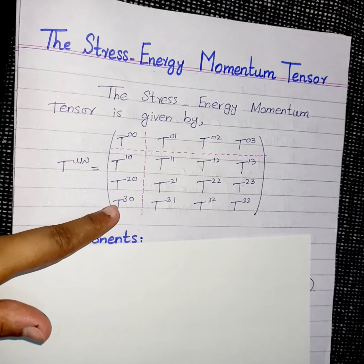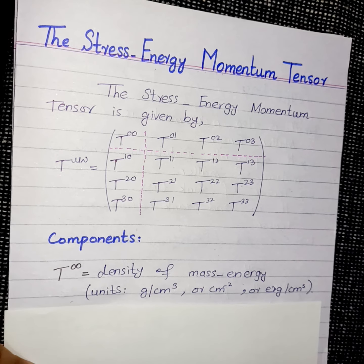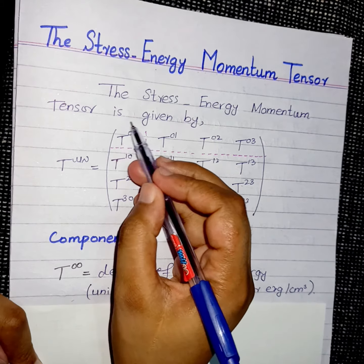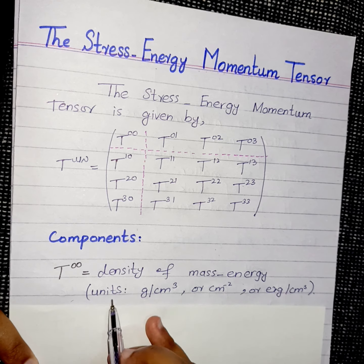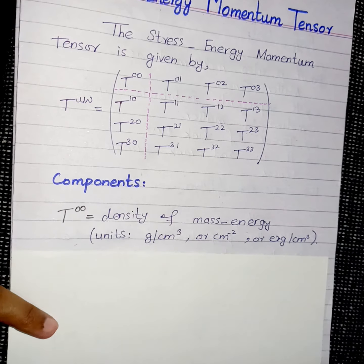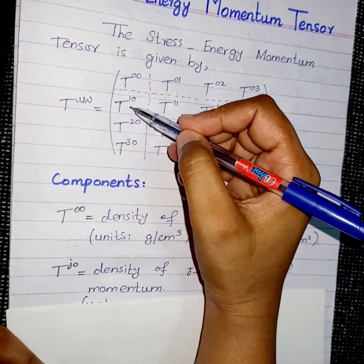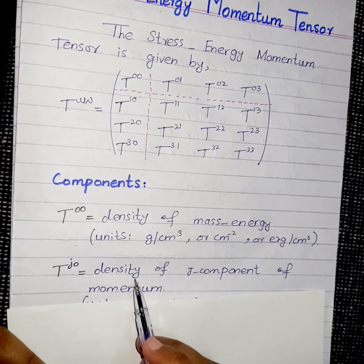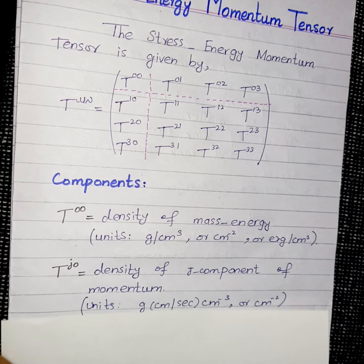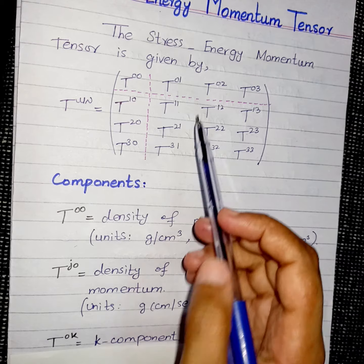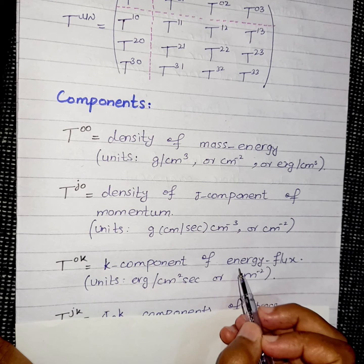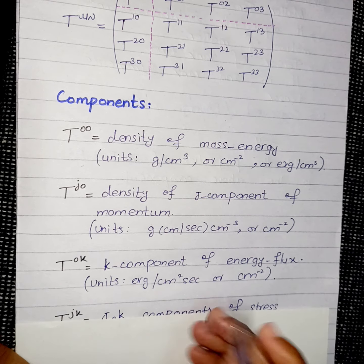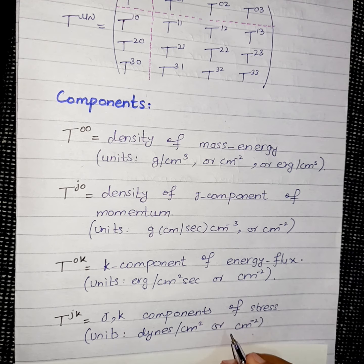The stress-energy momentum tensor is given by T mu nu. The component T zero zero represents the density of mass-energy, with units as shown. T j zero represents the density of the j component of momentum, with its units given here. Similarly, the next three components represent the components of energy flux with their respective units, and the remaining components represent the components of stress.